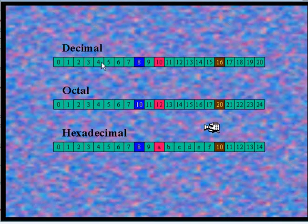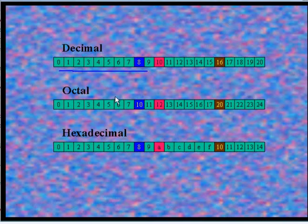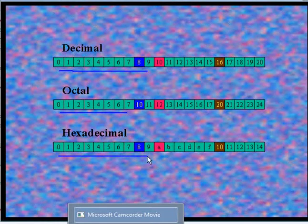Here I have shown the decimal number system, octal number system, and hexadecimal number system. In the decimal number system, digits are from 0 to 9. In the octal number system, there are 8 digits from 0 to 7. In the hexadecimal number system, there are 16 digits — from 0 to 9 and then from A to F.